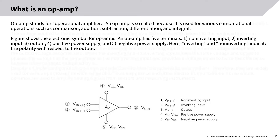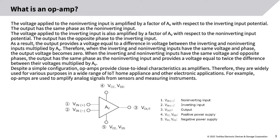The voltage applied to the non-inverting input is amplified by a factor of AV with respect to the inverting input potential; the output has the same phase as the non-inverting input. The voltage applied to the inverting input is also amplified by a factor of AV with respect to the non-inverting input potential; the output has the opposite phase to the inverting input. As a result, the output provides a voltage equal to the difference in voltage between the inverting and non-inverting inputs multiplied by AV. Therefore, when the inverting and non-inverting inputs have the same voltage and phase, the output voltage becomes zero.